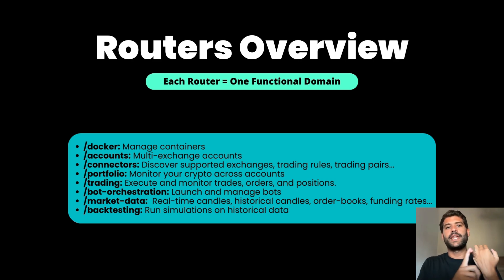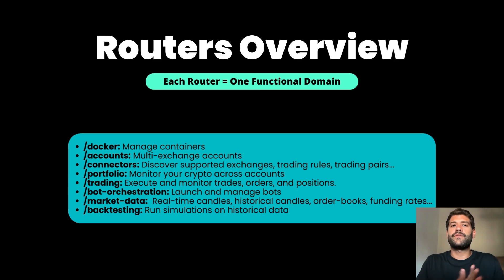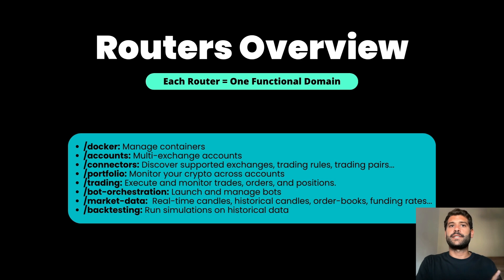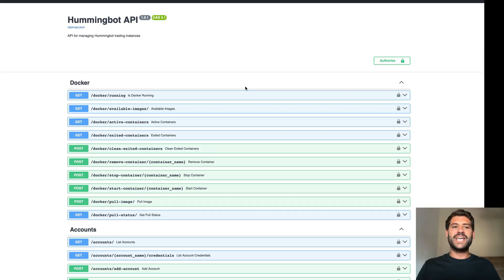The last router is back testing, where you can back-test controllers from directional trading or market making using candles. If you use Binance candles you can go down to one second resolution — it takes more time but will be more precise. However, I would not recommend using this router for back testing because we have another repo called QuantsLab that I strongly recommend for that purpose. This router is only useful if you already know what you're back testing and want to run quick experiments in the background.